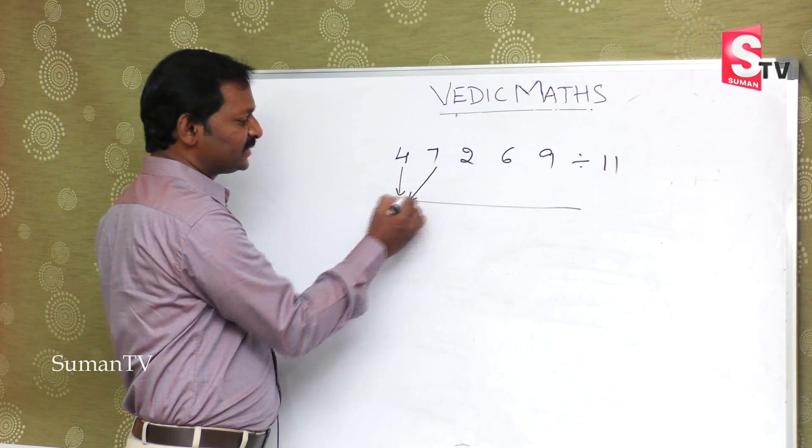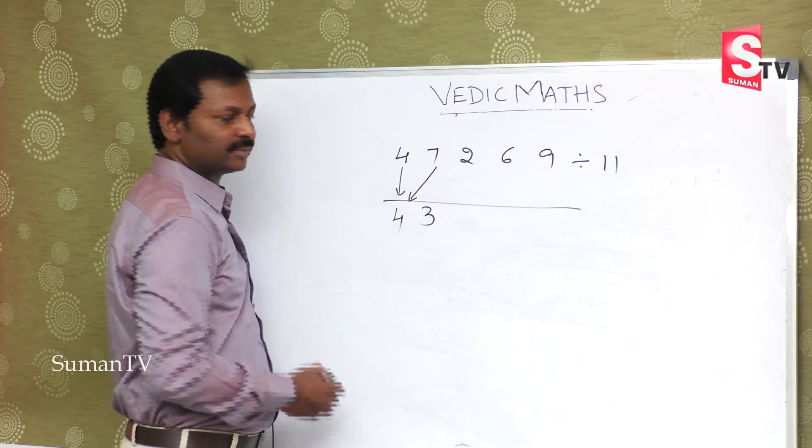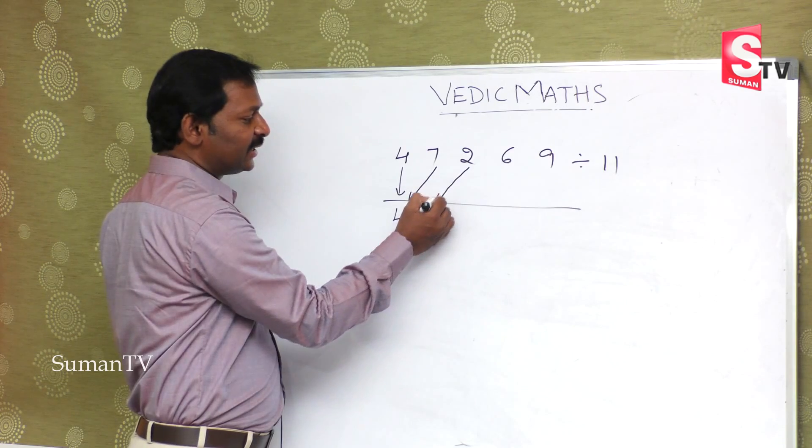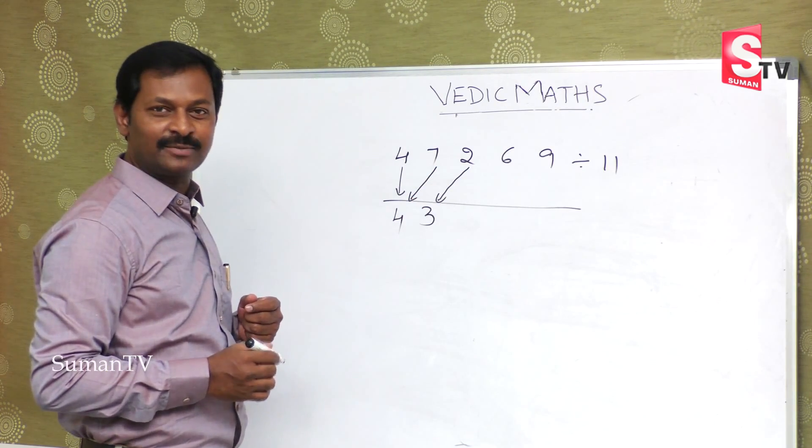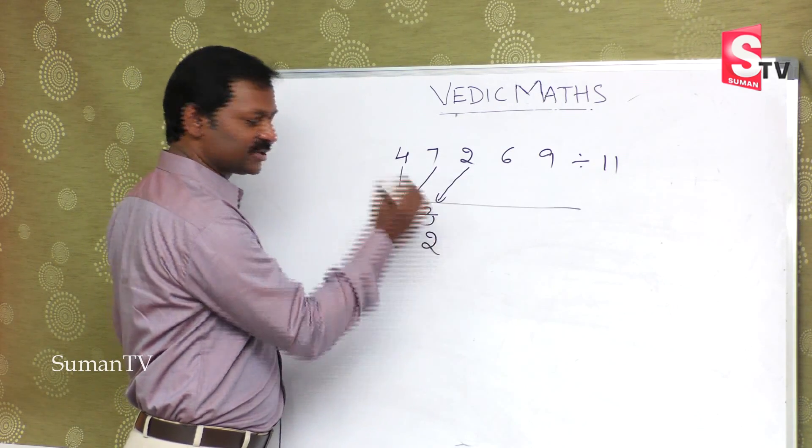Next number minus this number, that is 3. So 2 minus 3, is it possible? 2 minus 3 is not possible, so here we decrease a number.